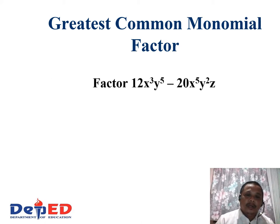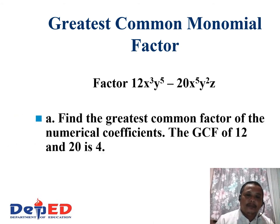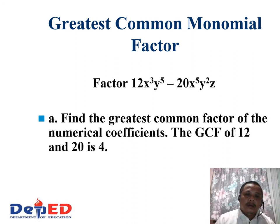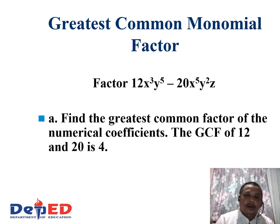For example, 12x cubed y to the fifth power minus 20x to the fifth power y squared z. First, find the greatest common factor of the numerical coefficients. The GCF of 12 and 20 is 4.